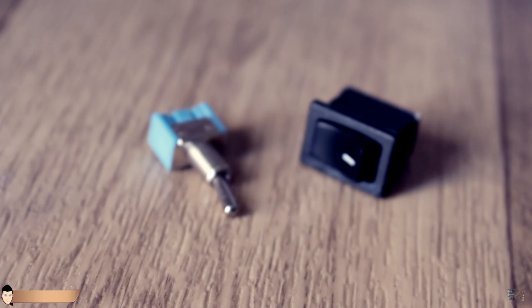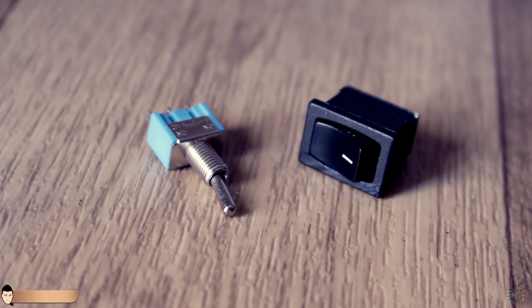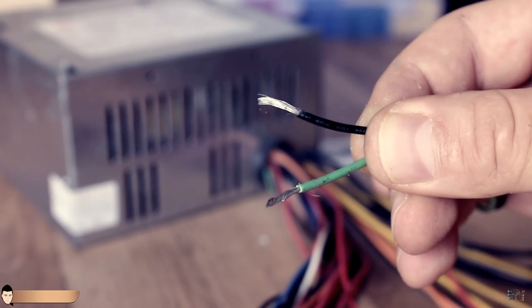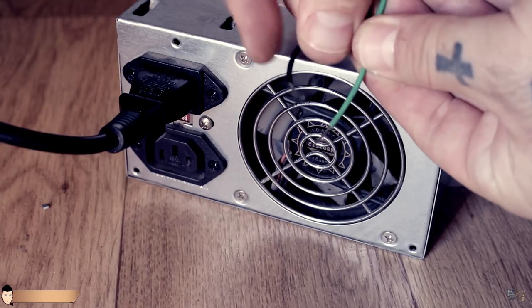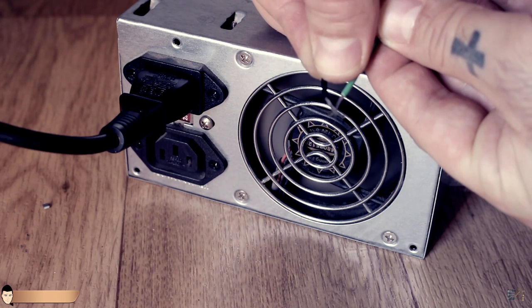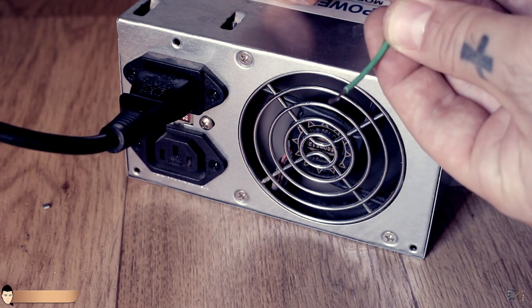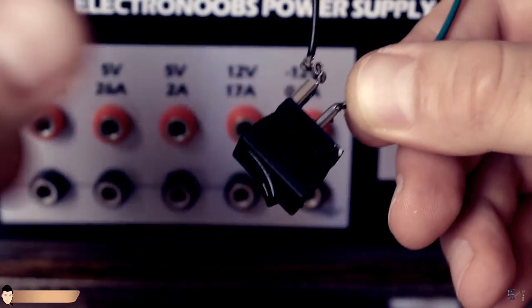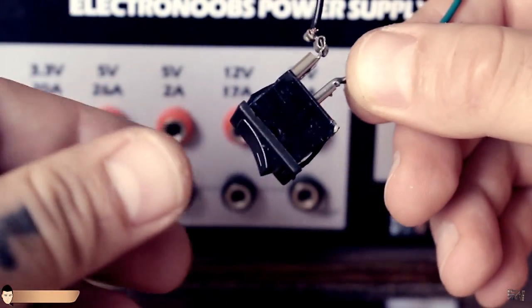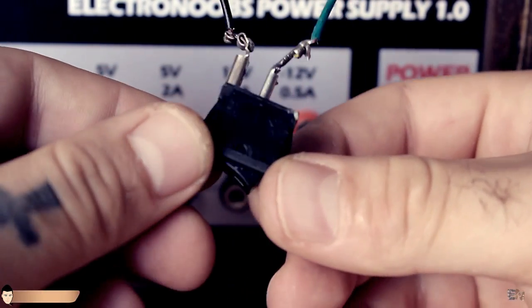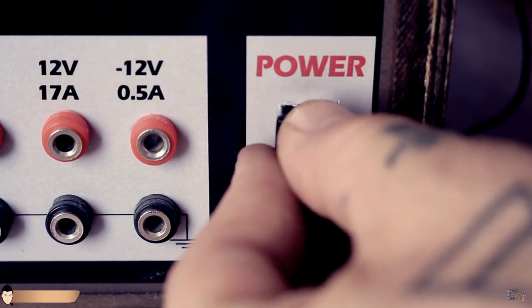All this power supply needs now is an on and off switch. Usually all power supplies turn themselves on by connecting ground to the green wire. As you can see here, when I make a bridge between those wires, the fan of the power supply turns on. So all I have to do is add a switch between the green and the ground wire. I connect this type of switch and add it to the front panel of the case.